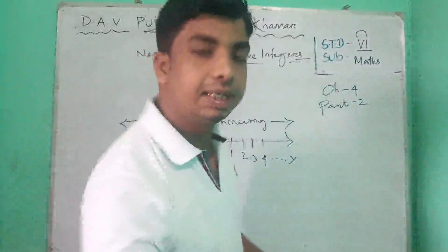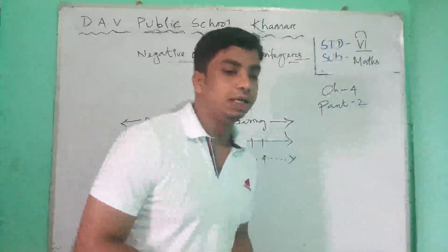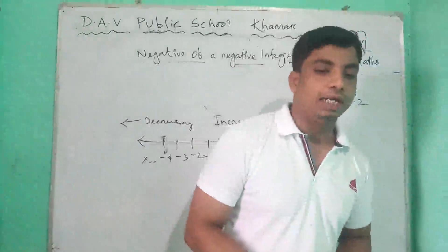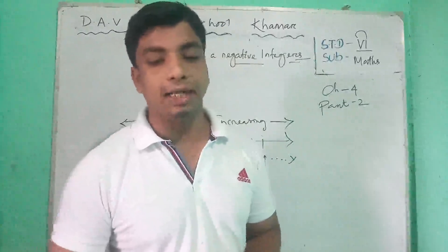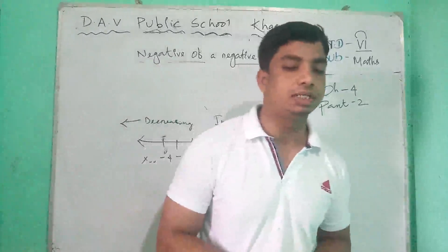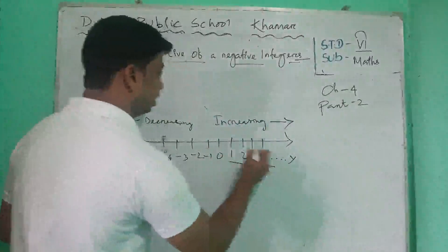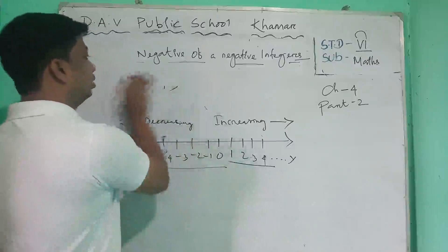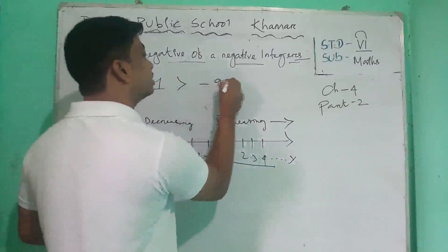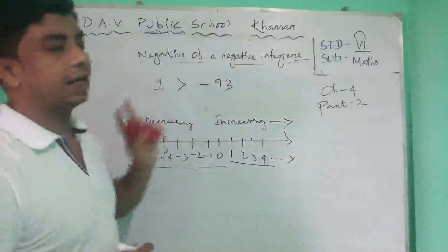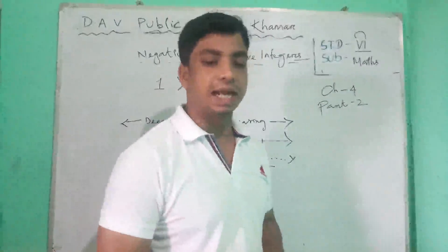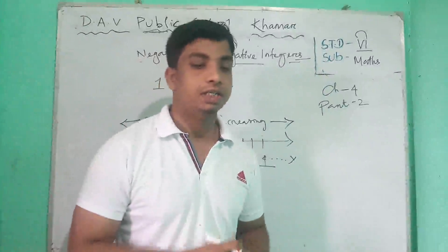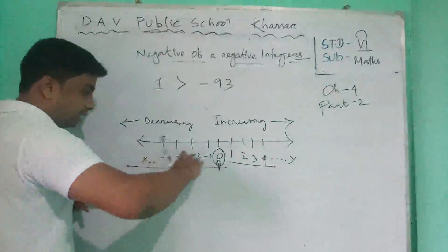The integers decrease towards the left and increase towards the right. From this fact we can know about greater and smaller numbers. For any two integers represented on the number line, the one indicated on the right is greater. So every positive integer is greater than every negative integer. And 0 is less than every positive integer.